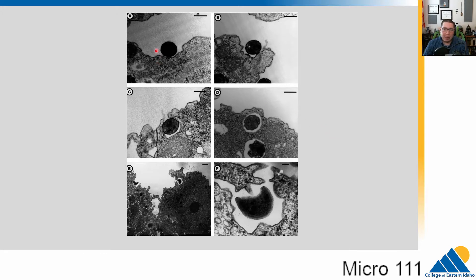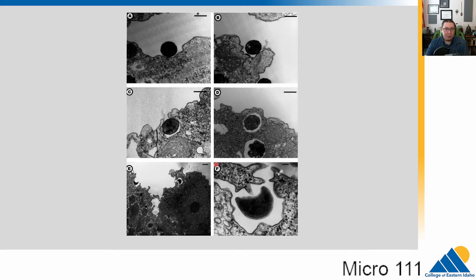Here is an actual example of phagocytosis occurring. This is our immune cell, and this is the pathogenic bacteria. It starts to cause invagination and then engulfs it into a little vesicle. That vesicle goes and binds with a lysosome. The lysosome starts breaking down that bacteria — it's got all kinds of toxic chemicals in it. This is literally how we fight infections.